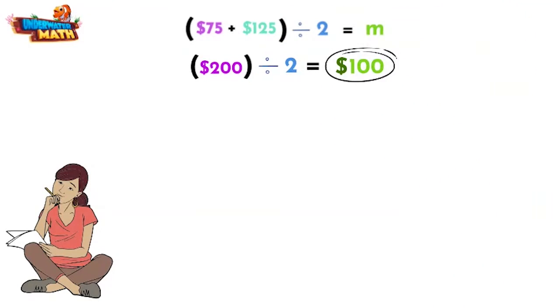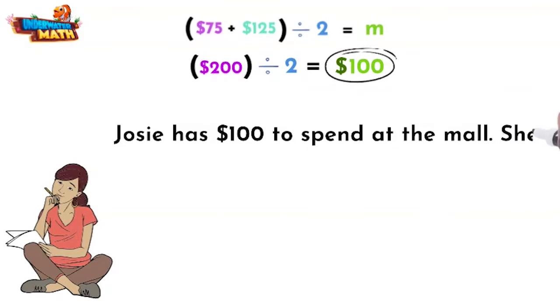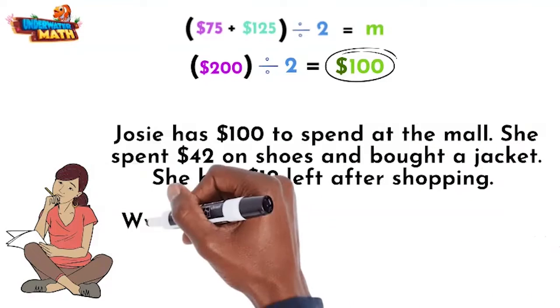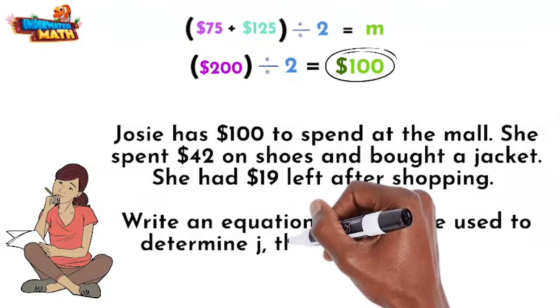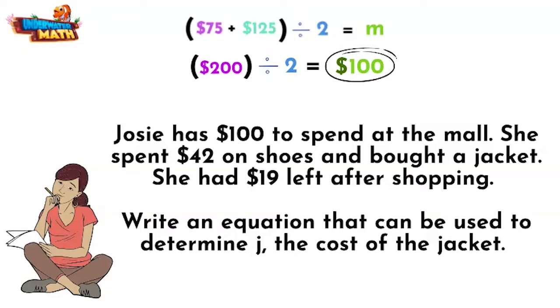Josie is using her earnings from Sunday to buy some new clothes. Josie has $100 to spend at the mall. She spent $42 on shoes and bought a jacket. She had $19 left after shopping. Write an equation that can be used to determine j, the cost of the jacket.